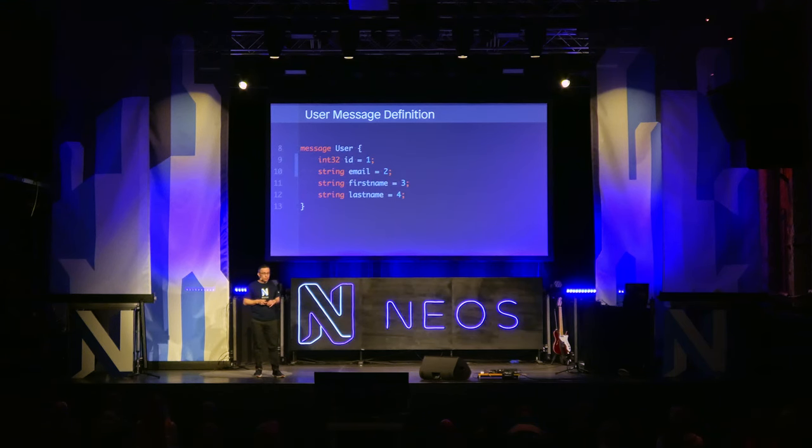After code generation, you get: a messages folder with stubs for all messages (User, UserCollection, etc.), a UserServiceClient for consuming the service, and a UserServiceInterface to implement on the server side. All you have to do is add a class implementing that interface. For example, create a UserCollection, create a User, add it to the collection — that's where you'd normally query your database. You don't have to build your own DTOs, routing, or anything — it's all done.